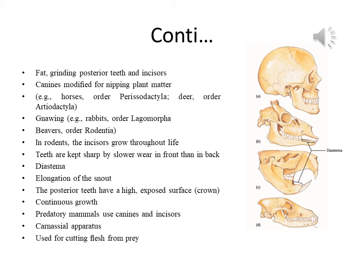Mammals that eat plant material often have flat grinding posterior teeth and incisors, and sometimes canines modified for nipping plant matter — for example horses from order Perissodactyla and deer from order Artiodactyla. Some are modified for gnawing, for example rabbits from order Lagomorpha and beavers from order Rodentia. In rodents, the incisors grow throughout life. Although most mammals have enamel covering the entire tooth, rodents have enamel only on the front surfaces of their incisors.